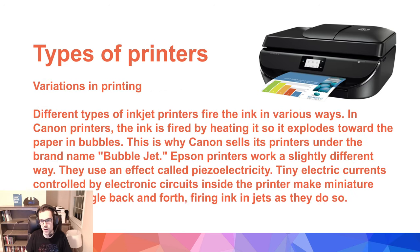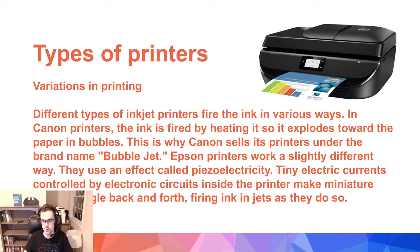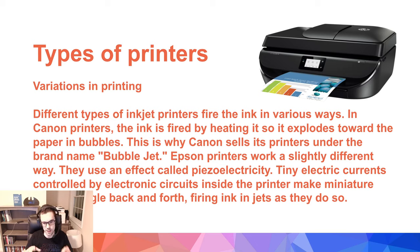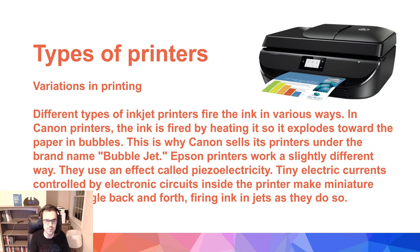Different types of inkjet printers fire the ink in a variety of ways. In Canon printers, the ink is fired by heating it, so it explodes towards the paper in bubbles — this is why Canon sells its printers under the name 'Bubble Jet.' Epson printers work a slightly different way, using tiny electronic currents controlled by electronic circuits inside the printer that make miniature crystals jiggle back and forth, firing ink in jets as they do so.